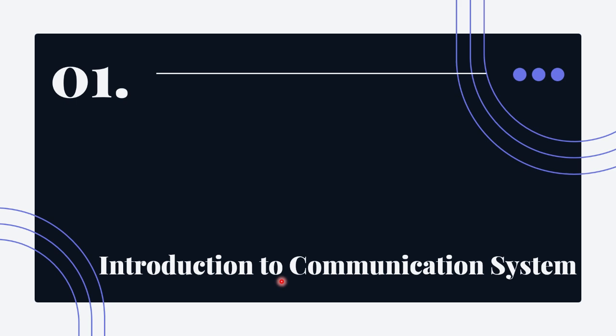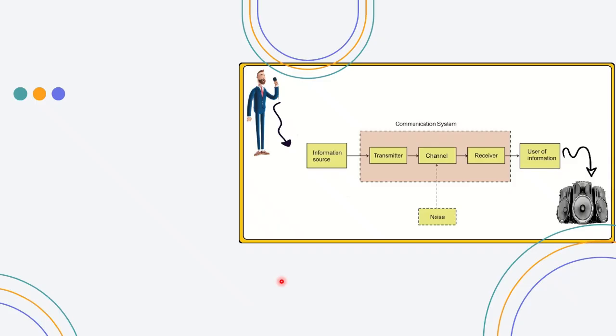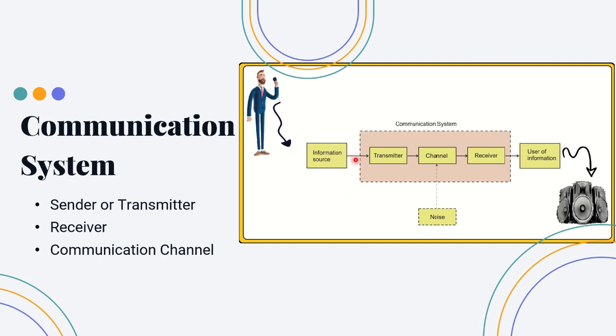First chapter is Introduction to Communication System. Here we have the block diagram of the basic communication system. We have three main blocks: sender or transmitter, receiver, and communication channel.